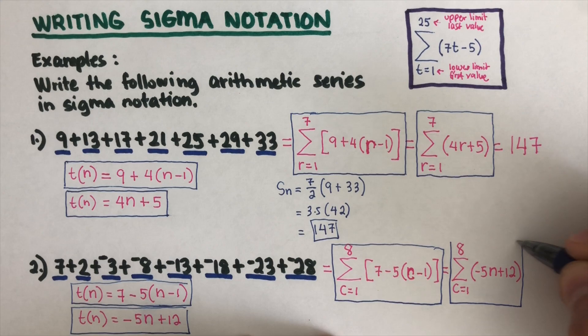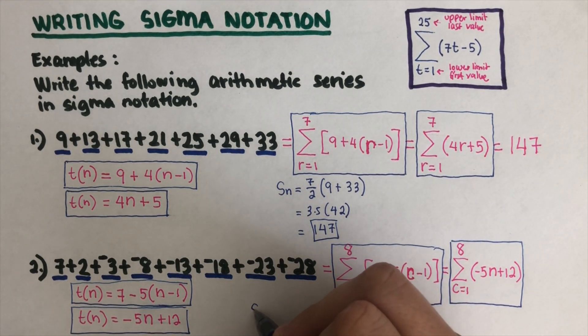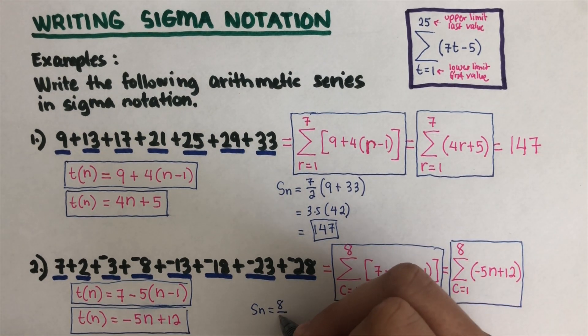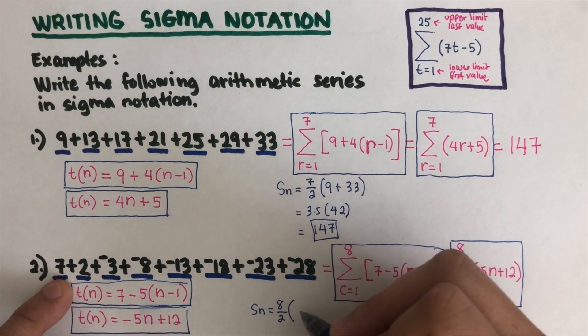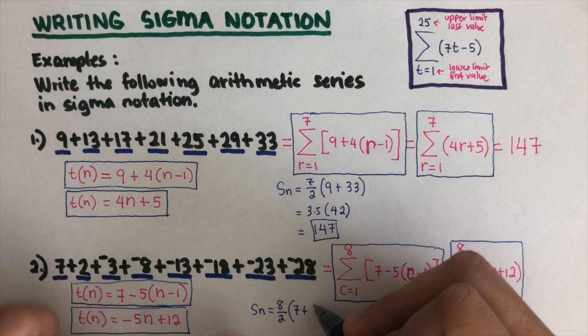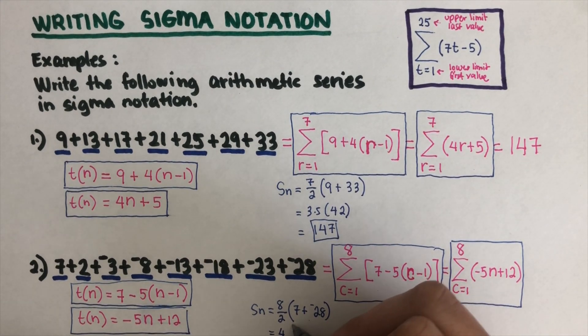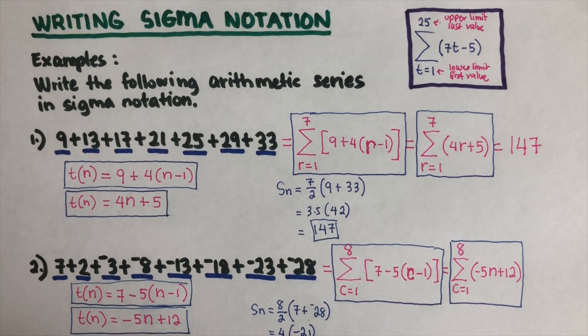We find the sum. S(n) again is equal to 8 divided by 2 times first term 7 plus negative 28. This is 4 times negative 21, and this is negative 84.